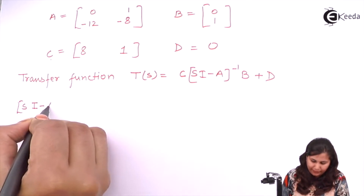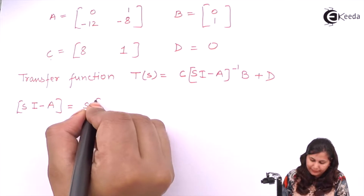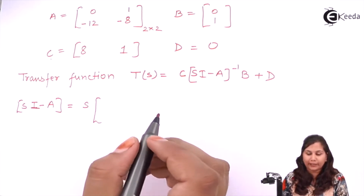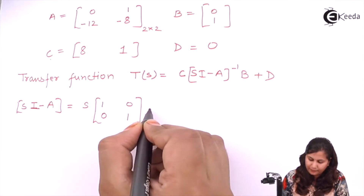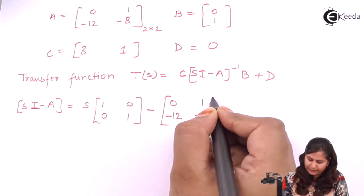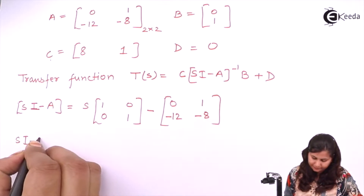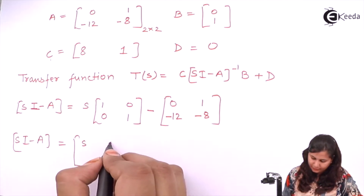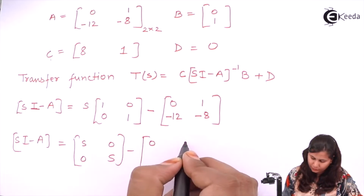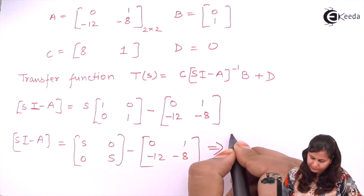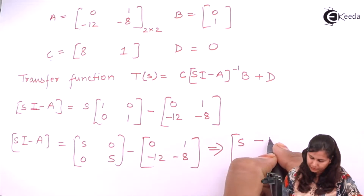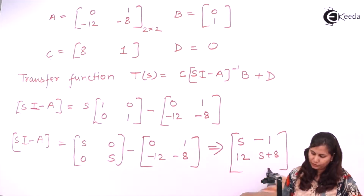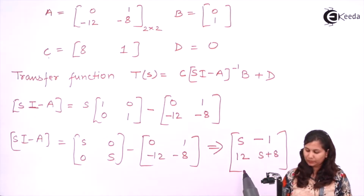Let us first calculate sI minus A. This is s multiplied by the identity matrix — since A is a 2×2 matrix, the identity matrix I is also 2×2, so it is [1, 0, 0, 1] — minus A, which is [0, 1, -12, -8]. So the value will be s times I minus A, giving us [s, -1, 12, s+8].